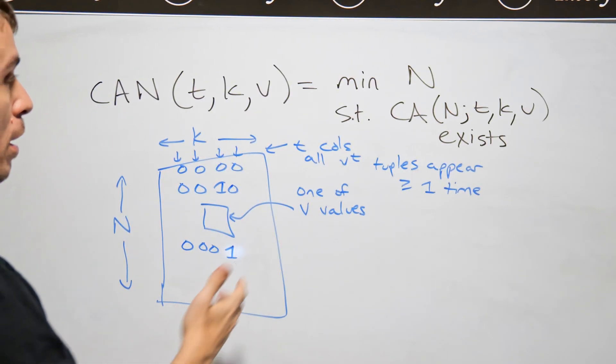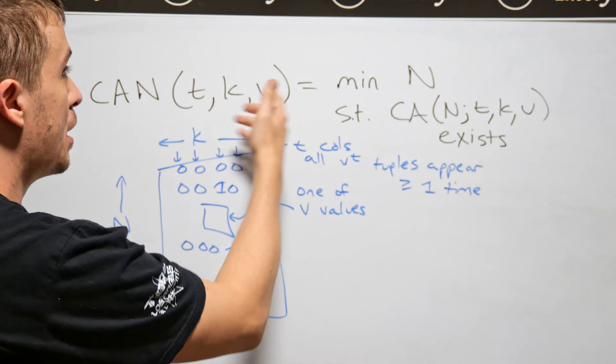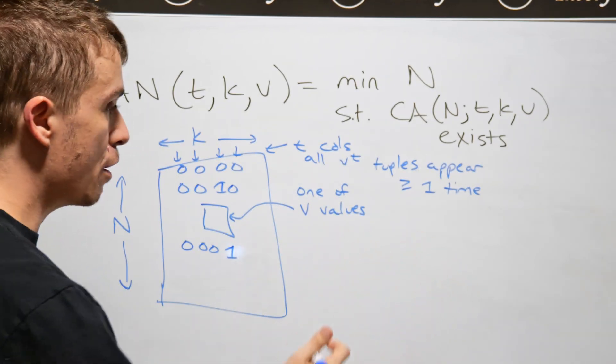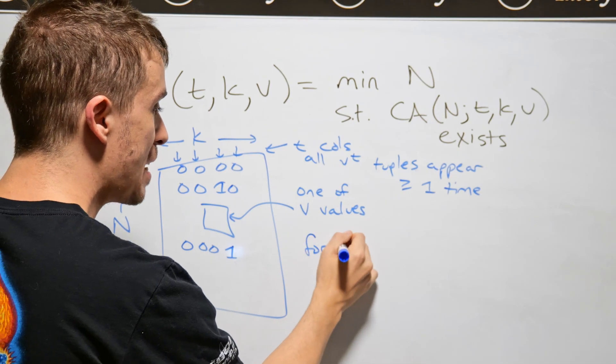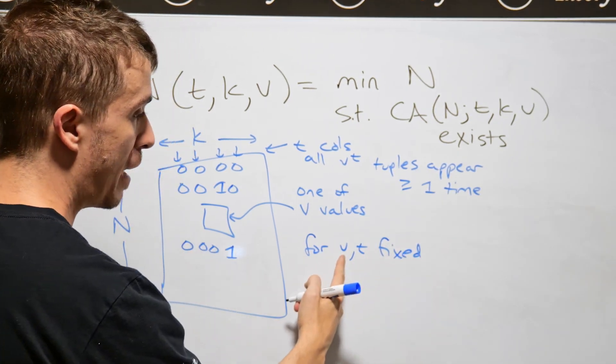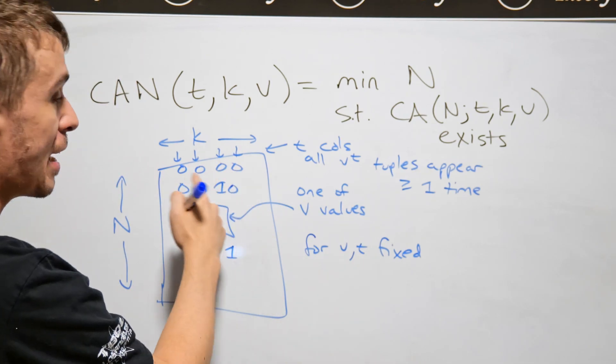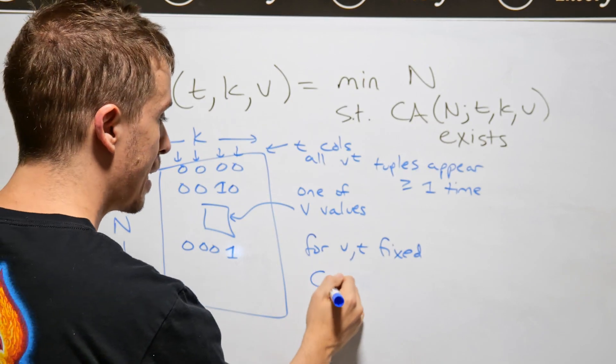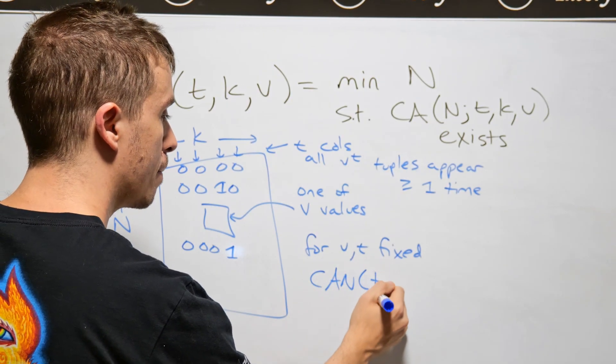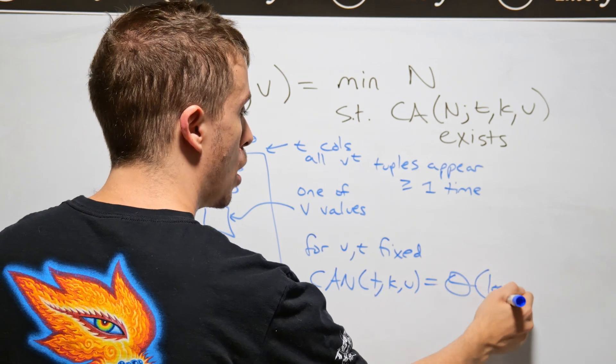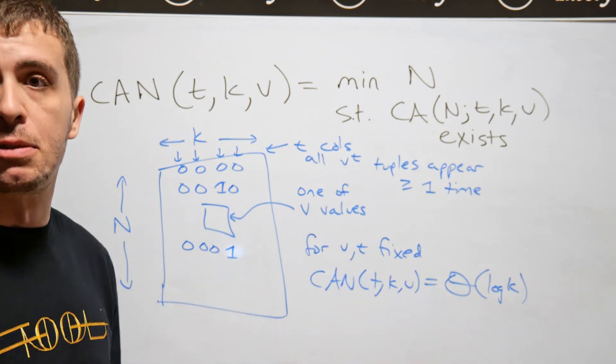And what I've proved in that last video is how big is this quantity. So what is proven and what I did in that video is that for v and t fixed, if I fix the number of values that you can see and the strength as it's called the t value,